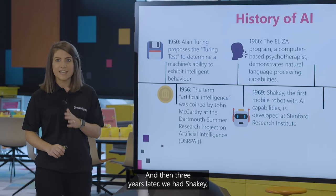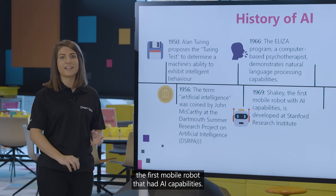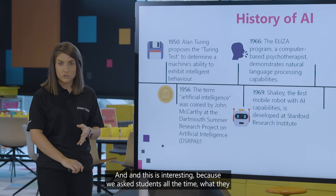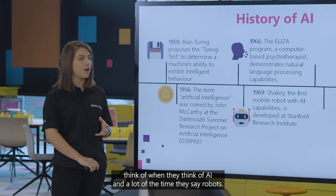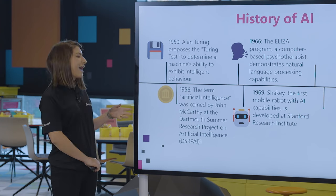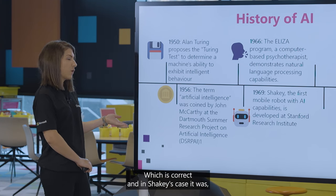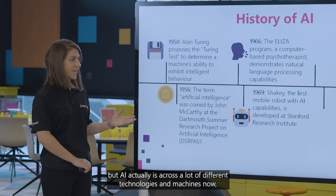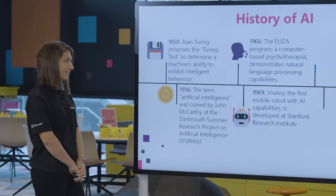Three years later, we had Shakey — the first mobile robot that had AI capabilities. This is interesting because when we ask students what they think of when they think of AI, a lot of the time they say robots, which is correct. But AI actually is across a lot of different technologies and machines now, not just robots.